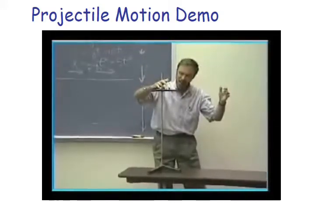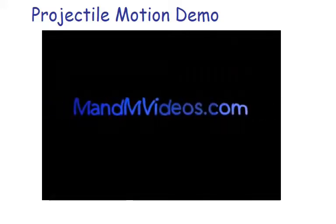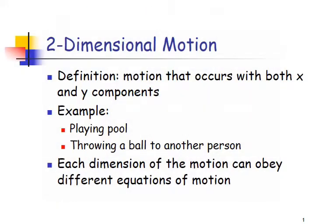Gravity doesn't take a holiday on an object just because it's moving. When we look at motion in two dimensions, we're looking at motion that occurs in both X and Y components. Playing pool or throwing a ball to another person are examples — there's motion in both X and Y. Each dimension of the motion can obey different equations of motion, and this is a key idea.